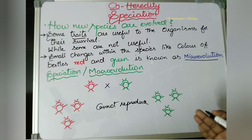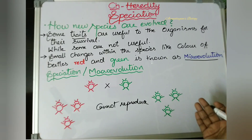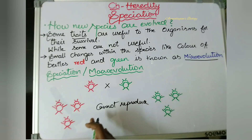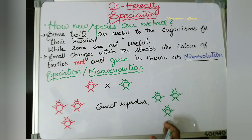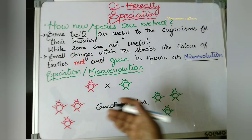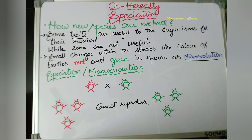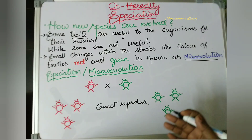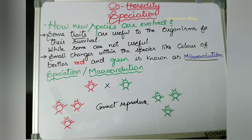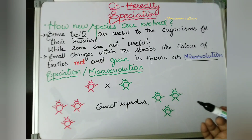Now the red-colored and green-colored beetles belong to two different species. So these variations have produced two different species. Even though they meet with each other, they cannot reproduce and cannot produce offspring — because now they belong to different species. That is about micro-evolution and macro-evolution, and how new species are produced through speciation.